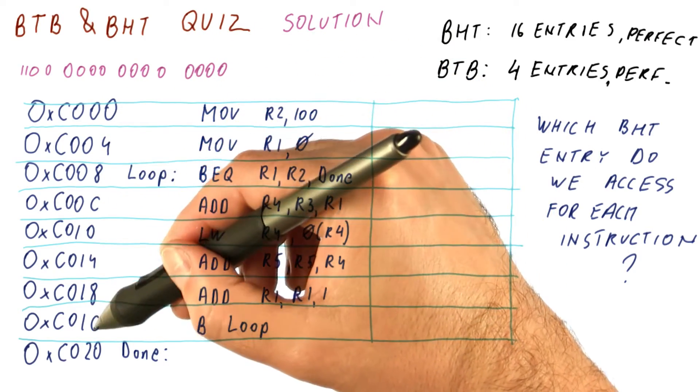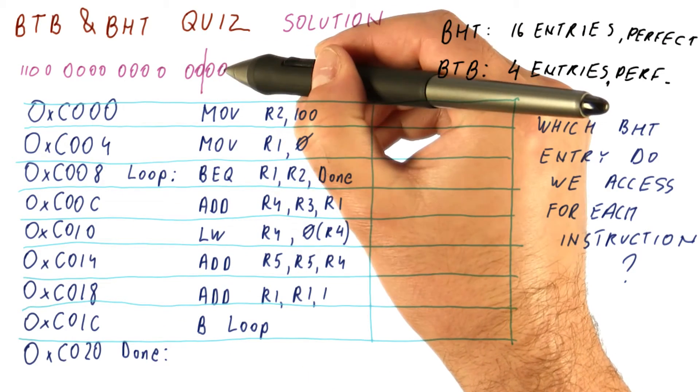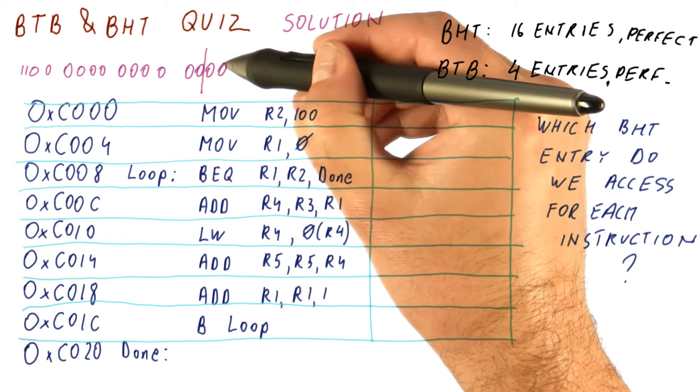Because every instruction is four bytes in size, the lowermost two bits are never changing. They're always going to be zero for all instructions.